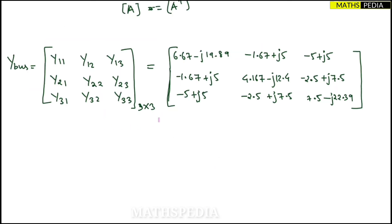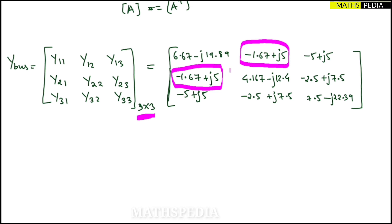We have now found all values for the 3×3 Y-bus matrix. Observe that non-diagonal elements are symmetric: Y12 = Y21, Y13 = Y31, Y23 = Y32. This confirms that the Y-bus matrix is a symmetric matrix — a key property.